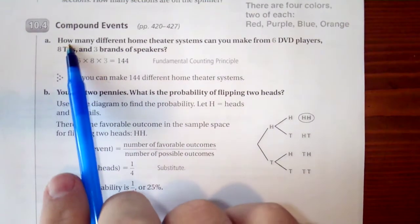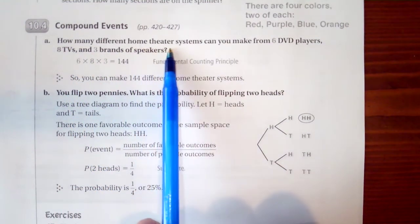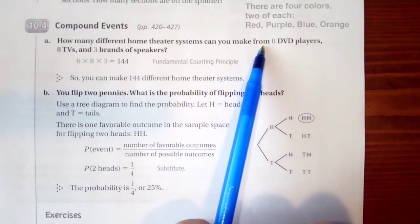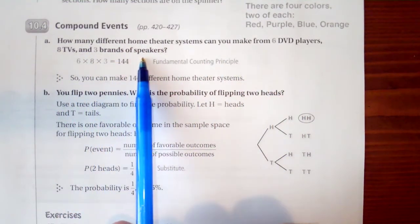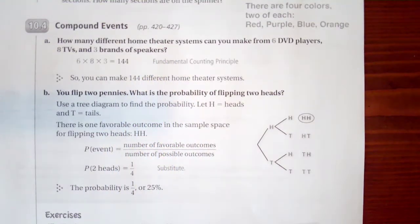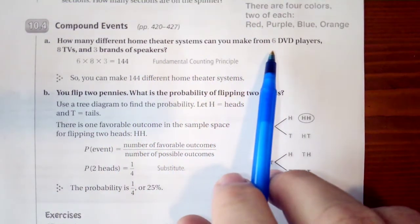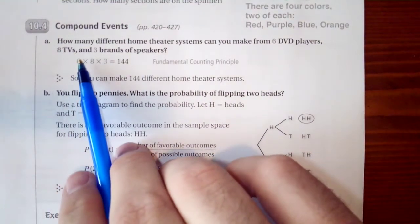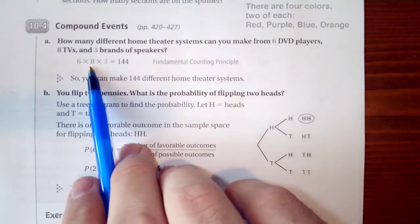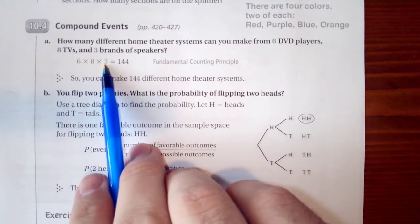We have how many different home theater systems can we make from 6 DVD players, 8 TVs, and 3 brand new speakers. Obviously we're not going to have, generally we're going to have 1 DVD player but for the contents of this event, we have 6 DVD players, 8 TVs, 3 speakers.